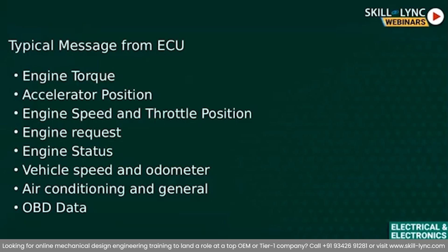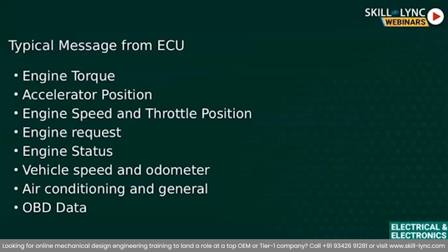Let's move on to the next slide where we try to understand the typical messages given to an ECU from various sensors in a car. ECU stands for Electronic Control Unit. The typical messages processed by an ECU include engine torque, accelerator position, engine speed, throttle position, engine request, engine status, vehicle speed, odometer, air conditioning, and OBD data — which stands for onboard diagnostics data. A modern-day car includes sensors such as mass airflow sensor, engine speed sensor, oxygen sensor, spark knock sensor, coolant sensor, manifold absolute pressure sensor, fuel temperature sensor, voltage sensor, camshaft position sensor, throttle position sensor, and vehicle speed sensor.